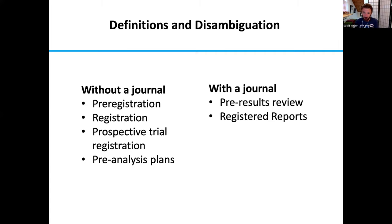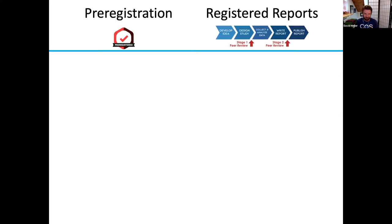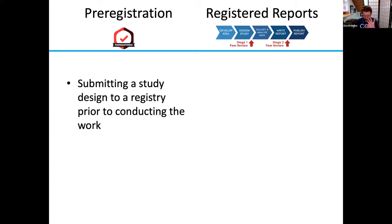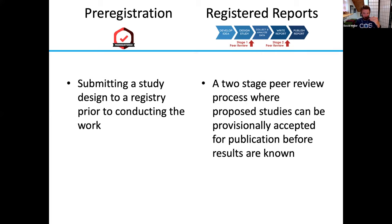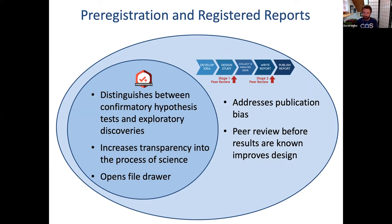The purpose of a pre-analysis plan is to distinguish what was planned from what was reported in light of the data. When those proposed study plans are sent to a journal and have the prospect of being guaranteed publication regardless of the main outcome of the study, that's known as registered reports or equivalently known as pre-results review at a journal. Registration is mainly about submitting a study design to a registry designed to distinguish confirmatory versus exploratory research processes.